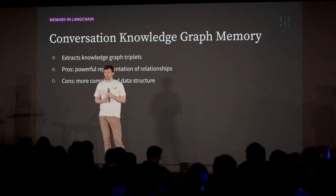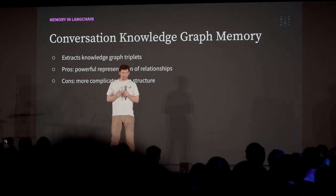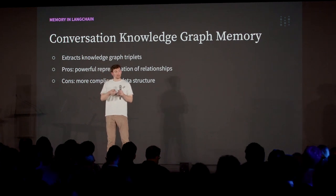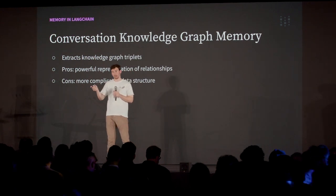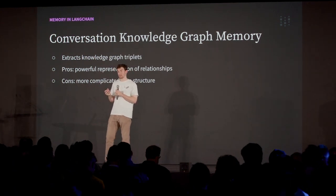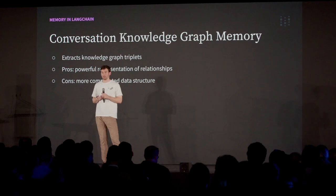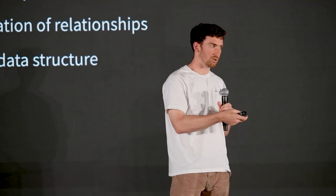A broader generalization of that is using a knowledge graph to represent various things. There's this concept of state — in this case a full-fledged knowledge graph. You update the state every turn by extracting new knowledge triplets and inserting them into the knowledge graph. Then you use this state in conversation by querying the knowledge graph for relevant triplets. The idea is there's this generalization where you've got this state, you're updating it at some cadence — every conversation, every five messages, every ten messages — and then there's a way of incorporating the state back in.